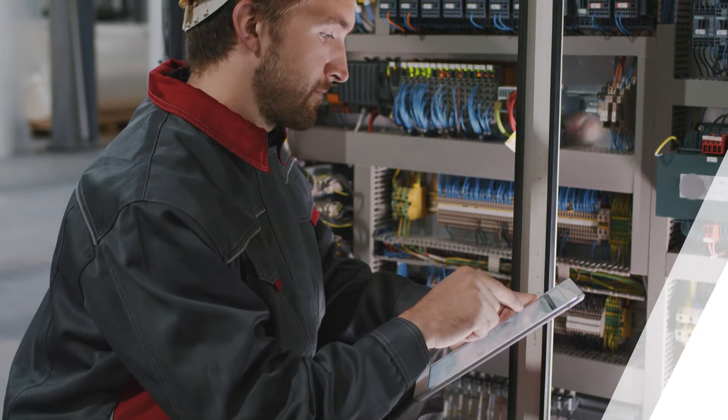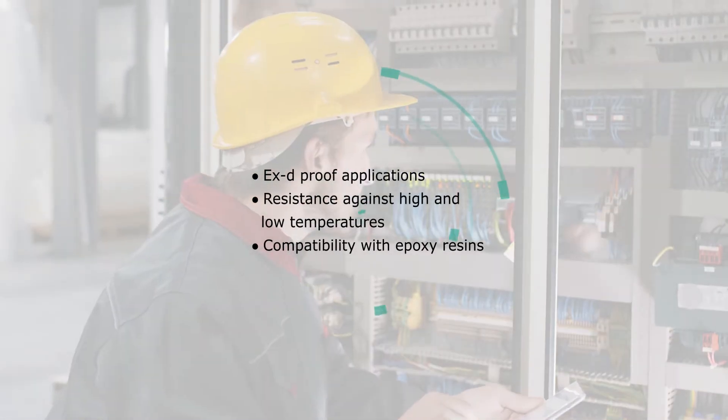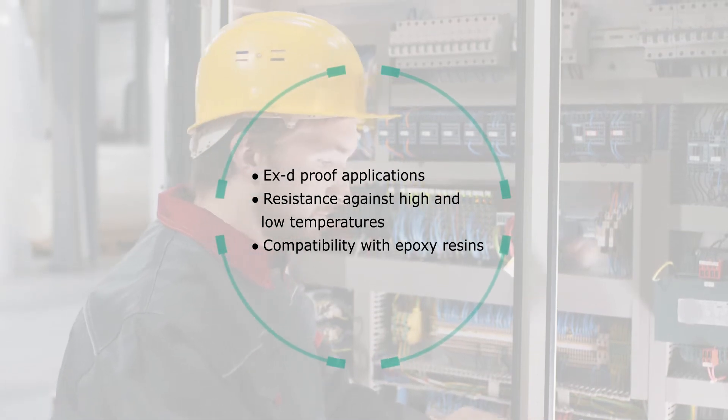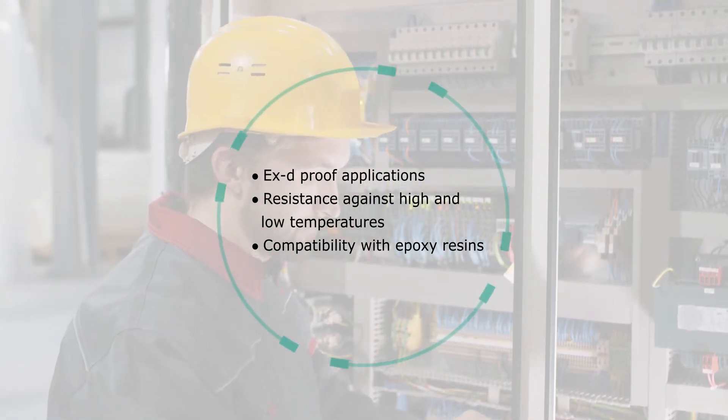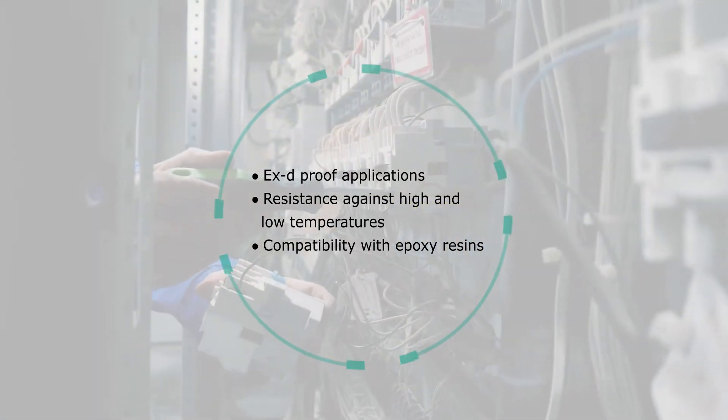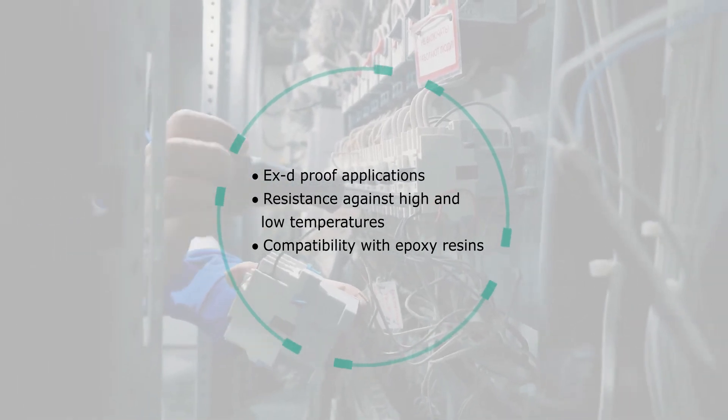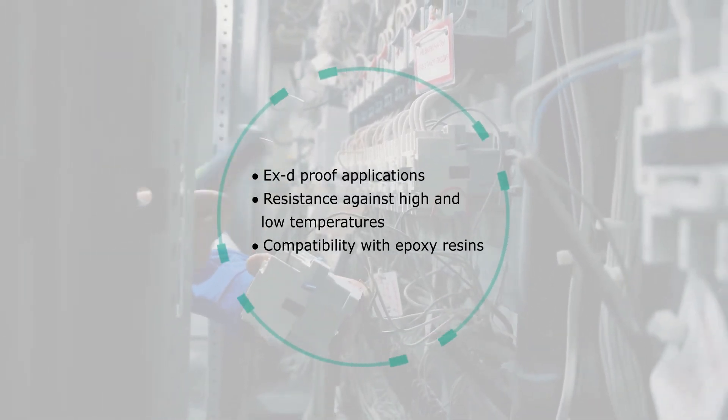Thanks to the extremely durable insulation material, the Redox 125 is ideal for unique installations such as line bushing for EX-proof applications. It provides excellent resistance against high and low temperatures, as well as proven compatibility with epoxy resins.